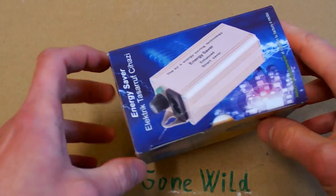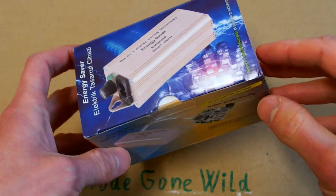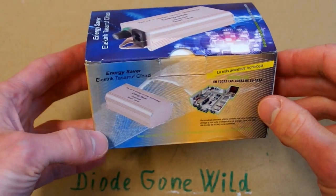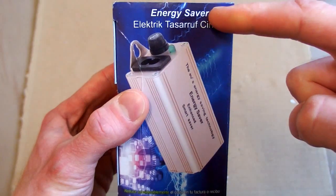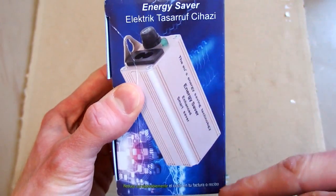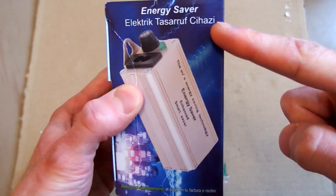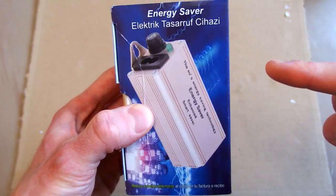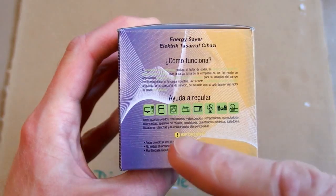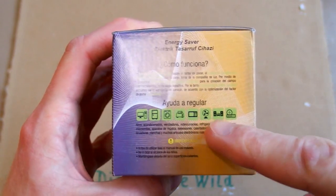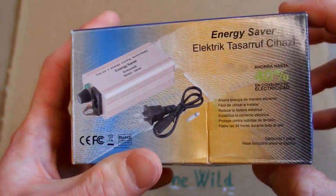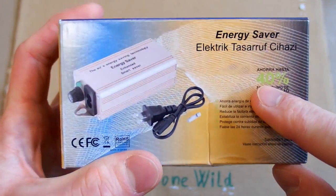There's time for another energy saver. This time I'm going to test this one in a metal box. The text is written partly in English, partly in Spanish and partly in something like Turkish. It's just a crazy mixture of languages. It shows pictures of some appliances. It says it can save 40% of power.